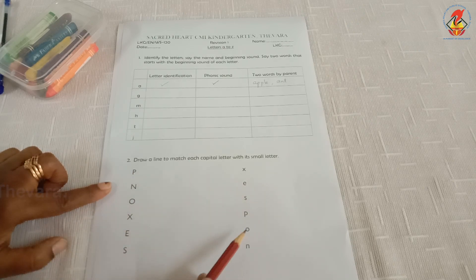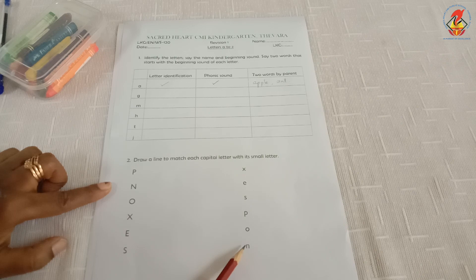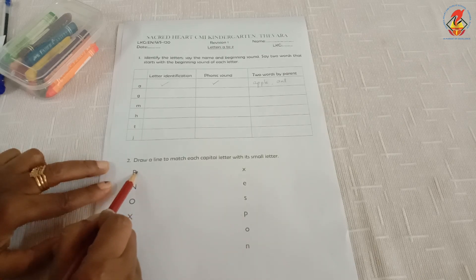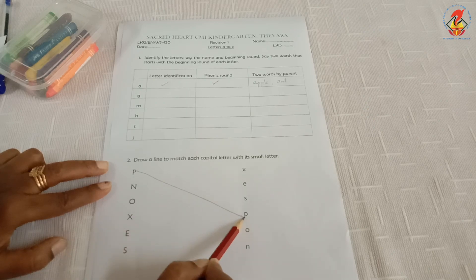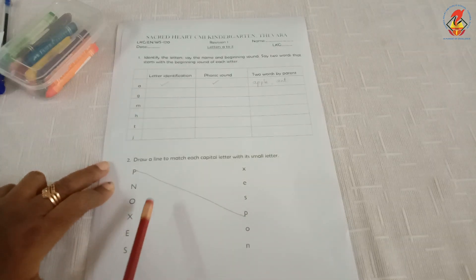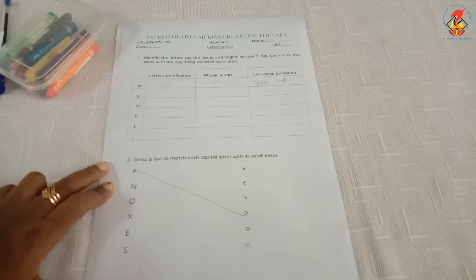And you have to find out the small letter of letter P. See, children, here you can see. So we have to match like this. In the same manner, you have to do rest of the questions.